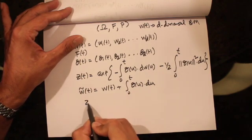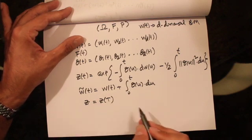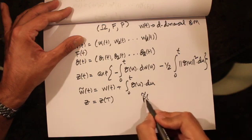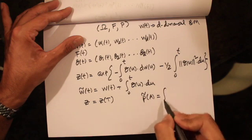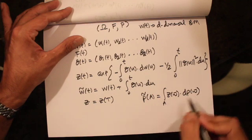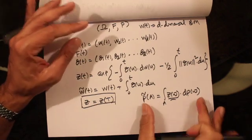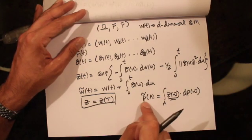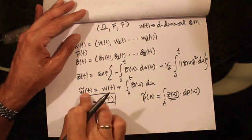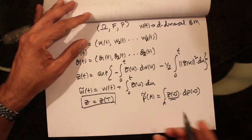Now let's assume that we have a random variable Z, which is Z at time T. We're going to define a new probability measure P-tilde, and we assign each set A a probability given by the formula: the integral over A of Z(omega) dP(omega), where Z(omega) is this Z(T).